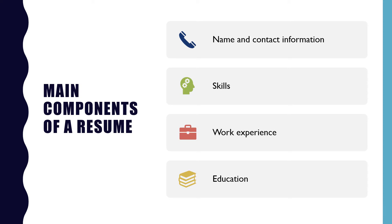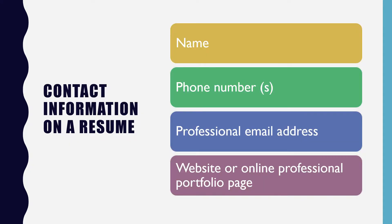There are certain components of a resume that are universal. These include your name and contact information, skills, work experience, and education. The contact information should include your name, email address, and phone number. If you have an electronic professional profile or web page, this is a great place to include a link to your LinkedIn profile. It is no longer necessary to include your home address in this section.